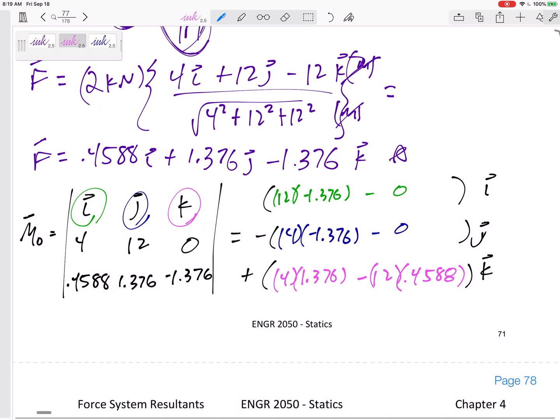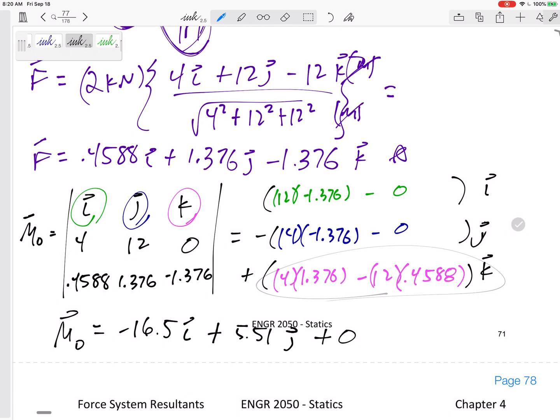Alright, and there we go. So I would get that's my I, that's my J, that's my K. And so I would get that the moment about 0.0 caused by this force is negative 16.5 in the I, positive 5.51 in the J, and then 0. This actually comes out to 0 in the K direction. So I guess I don't even have to write that. So nothing in the K. My units, I need units. Kilonewton, where the force was in kilonewtons. The dimensions were in meters. Kilonewton meters. And there we go. That's the moment.